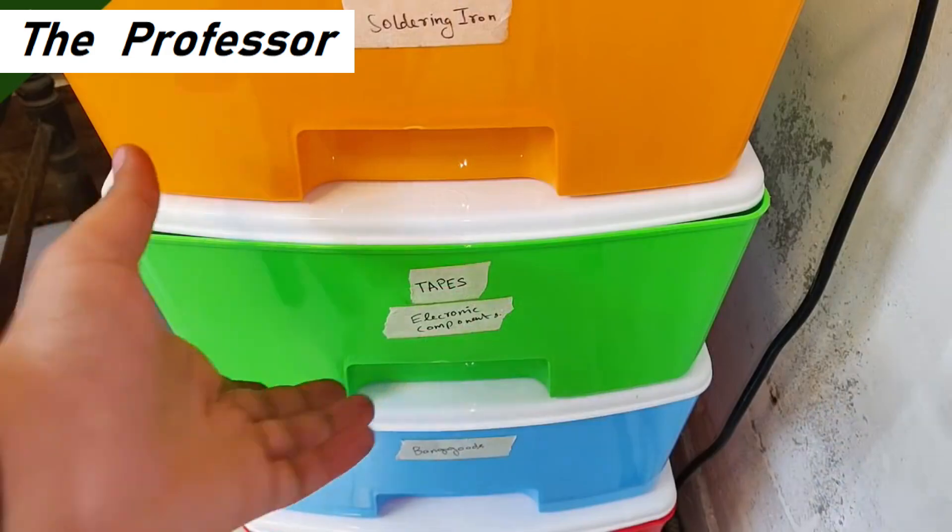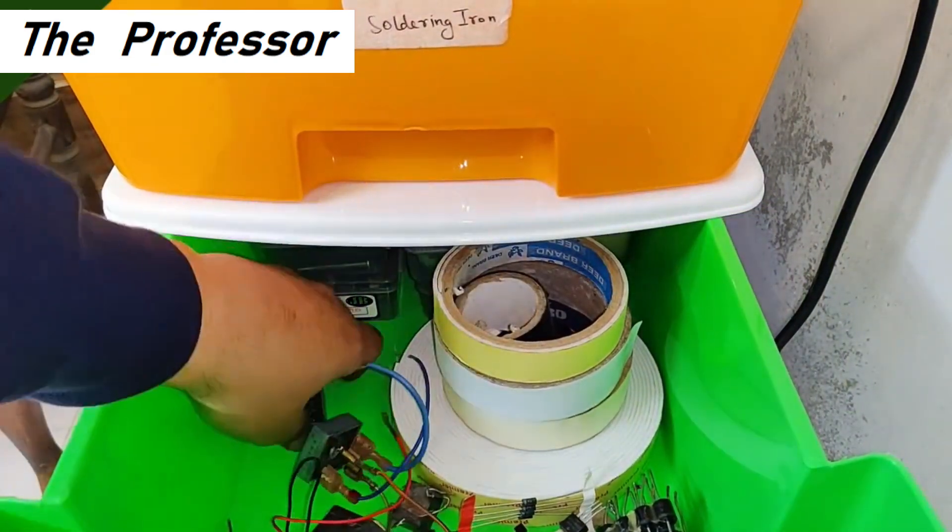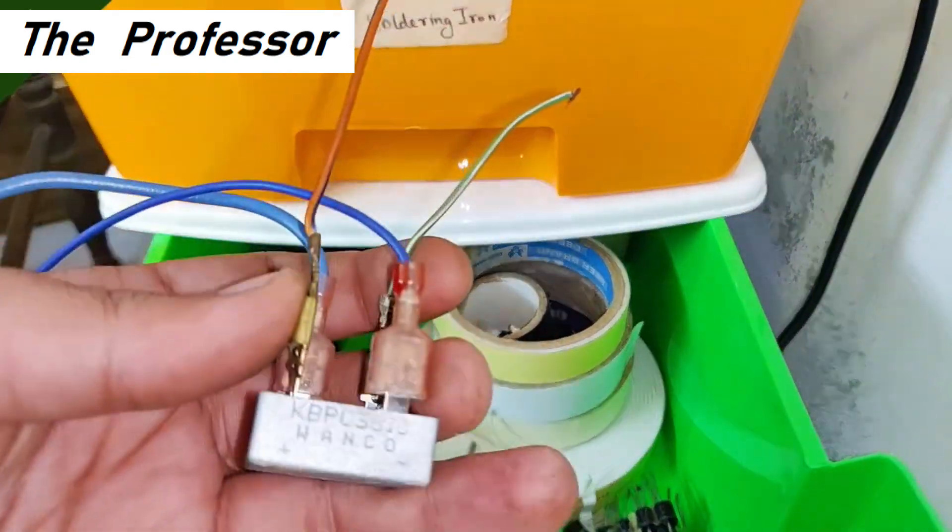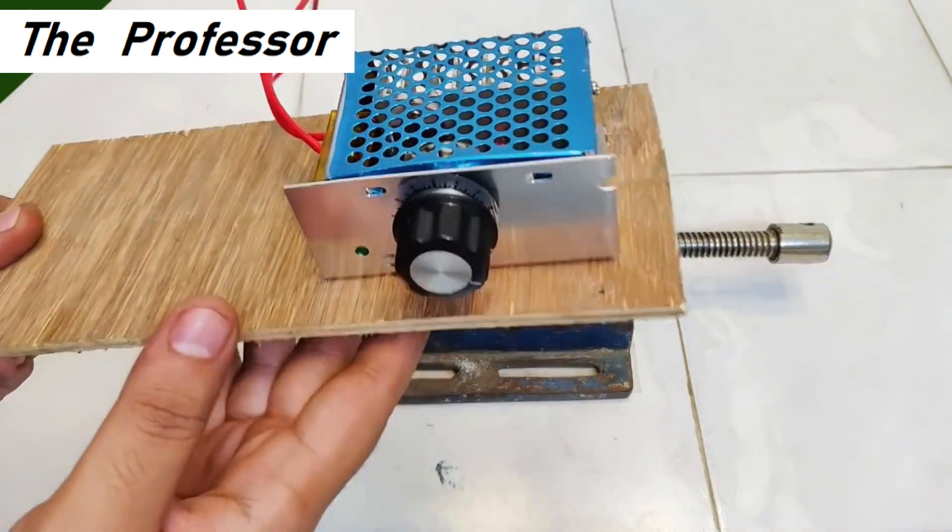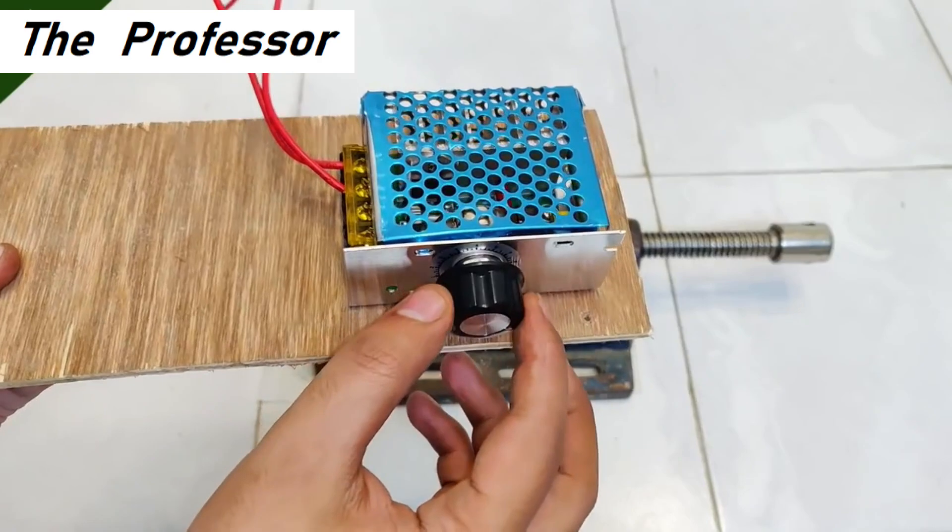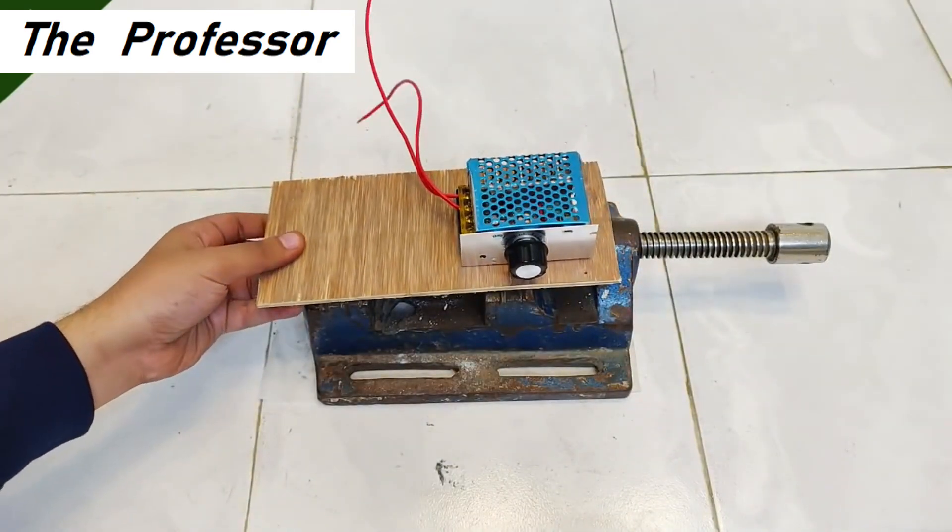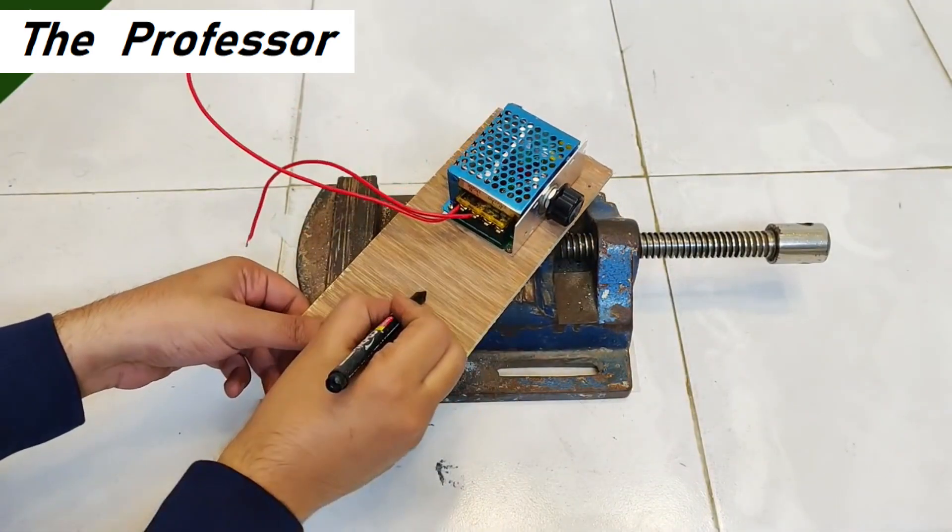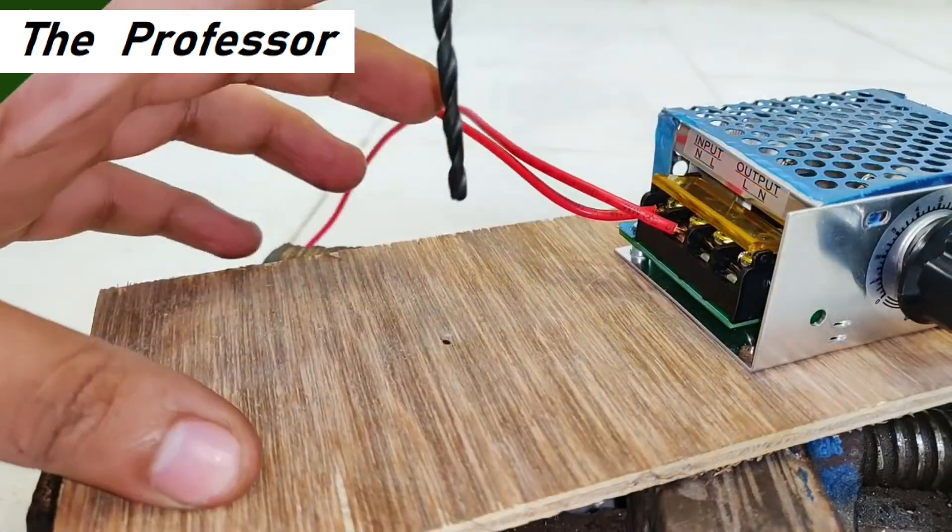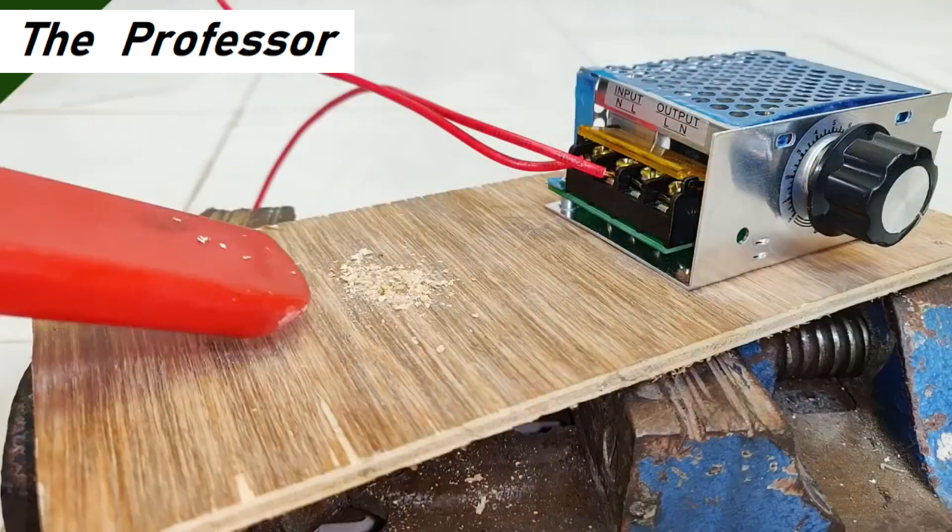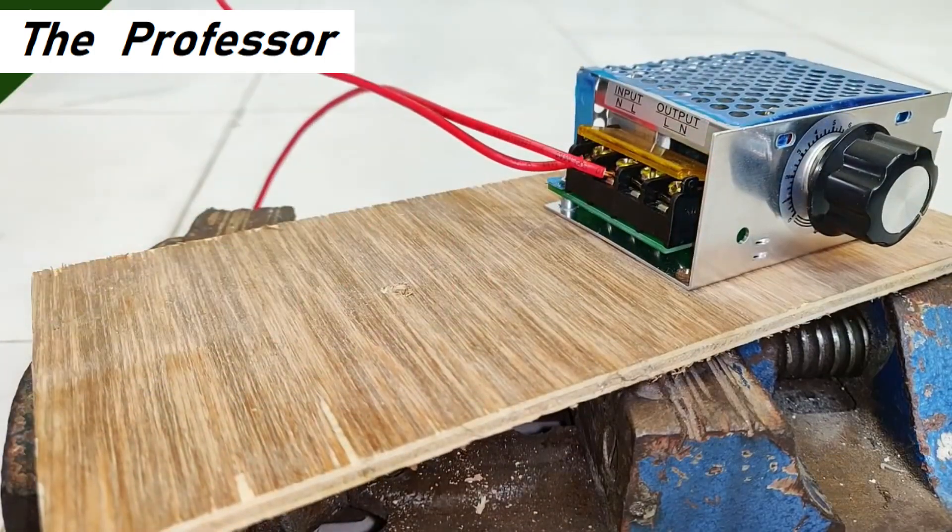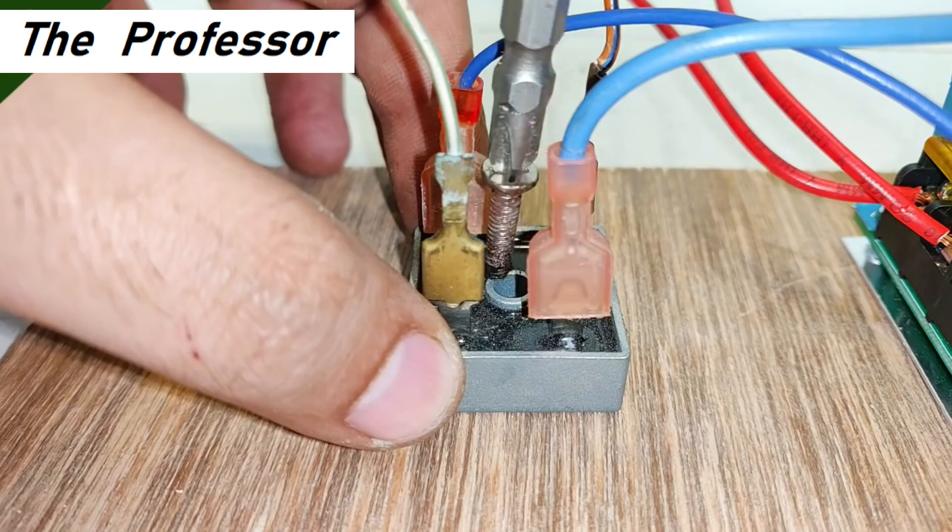The next most important component is going to be a 35 ampere bridge rectifier. Let's make a point for drilling a hole for the rectifier. Now let's do the drilling. I'm going to use a screw to mount it properly and strongly on the plywood.